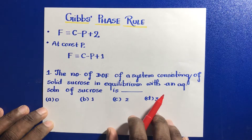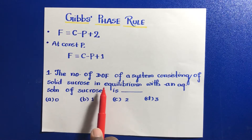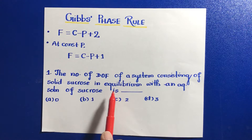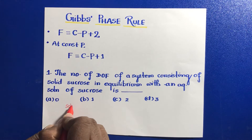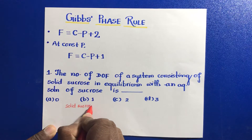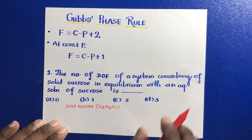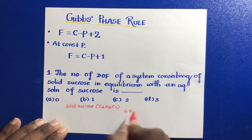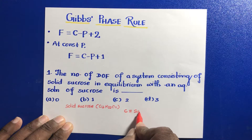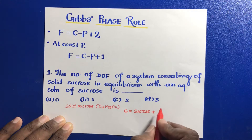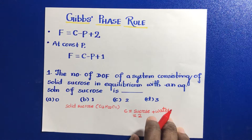Let's see a simple problem based on this phase rule. The number of degrees of freedom of a system consisting of solid sucrose in equilibrium with an aqueous solution of sucrose. We have solid sucrose, that is C12H22O11, that is the molecular formula. The number of components in this case are 2: one is sucrose, and the other is the solvent, that is water.